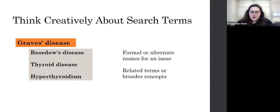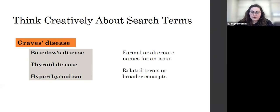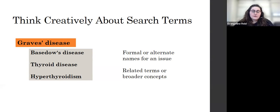The same thing can be said for the concept or disease that we're searching. Sometimes we can think a little bit broadly in terms of categories that it falls into — for example, thyroid disease or a related concept like Graves' disease, which is one of the main causes of hyperthyroidism. So if you were to look up hyperthyroidism, it may be possible that you find something that wasn't coming up a different way. You also want to think about if there are alternate names or formal names for the disease or problem that you're searching for — you may have more success with one than the other.